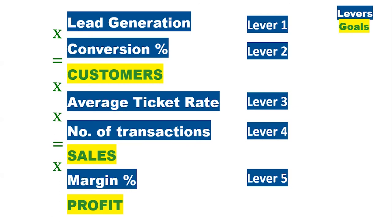For Margin — the fifth lever — this is where operating costs matter. Look at both top-line margin and cost. Not all products give equal margin; some give higher margin, some lower. Focus on higher-margin products: train your people to sell them, incentivize around them, and run promotions on those products. This way your average business margin will go up.